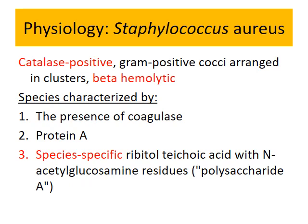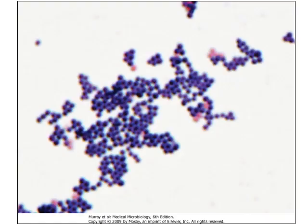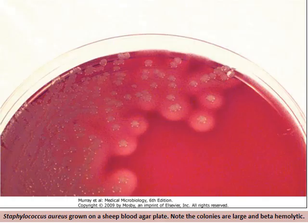Gram positive bacteria contain teichoic acid. If you look at the gram positive structure, you see the acetylglucosamine residue — it's called a polysaccharide. For gram staining, you see purple, and it looks like a bunch of grapes. If you grow them on a sheep blood agar plate, you can see colonies and around each colony there is a zone of hemolysis, because the bacteria releases toxins that chew up red blood cells — we call it beta hemolysis.